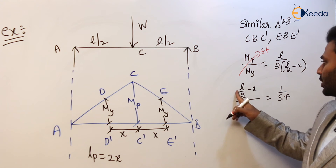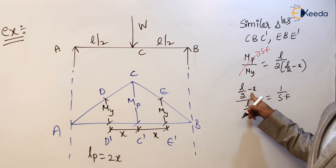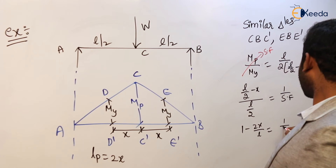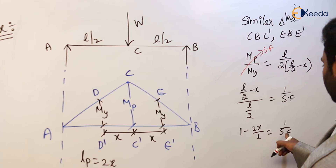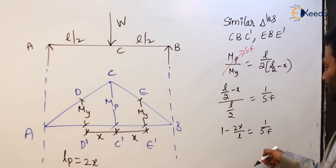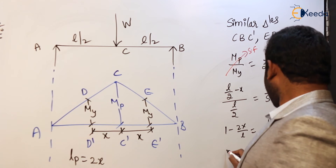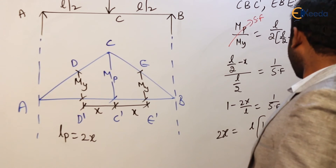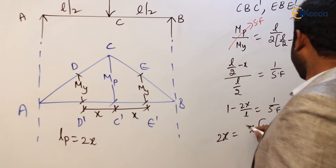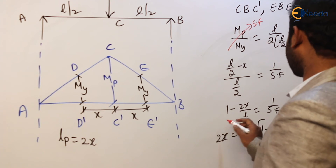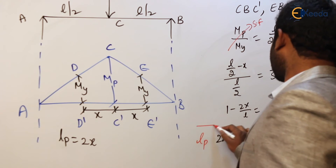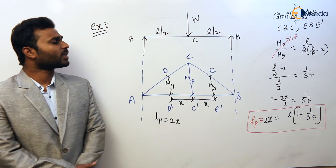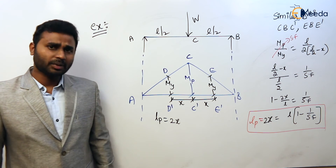Cancelling L/2 from both sides gives: 1 minus (2x/L) equals 1 divided by shape factor. Rearranging, 2x equals L times (1 minus 1 divided by shape factor). Since LP equals 2x, the plastic hinge length is LP = L × (1 − 1/shape factor). This is the complete procedure for calculating plastic hinge length for a simply supported beam with center point load.